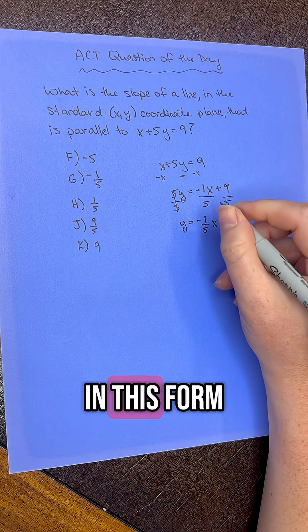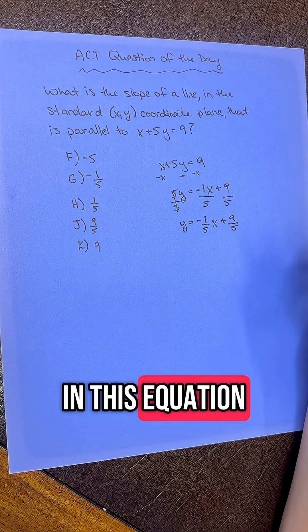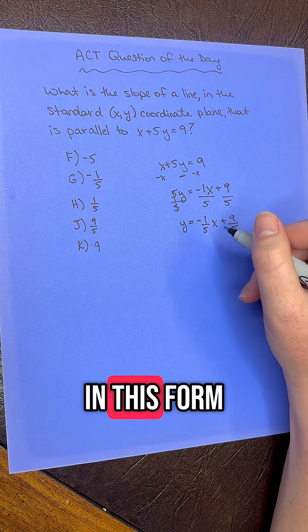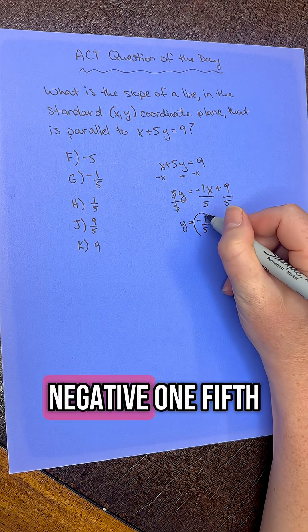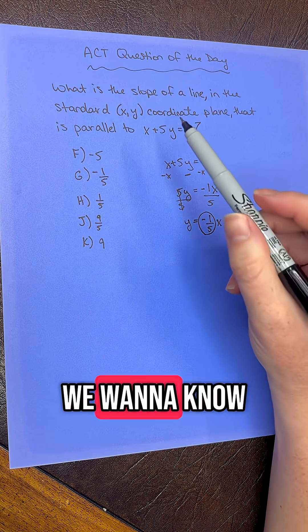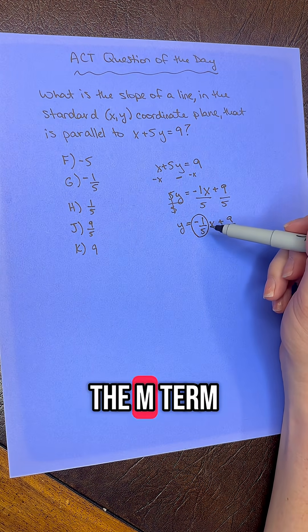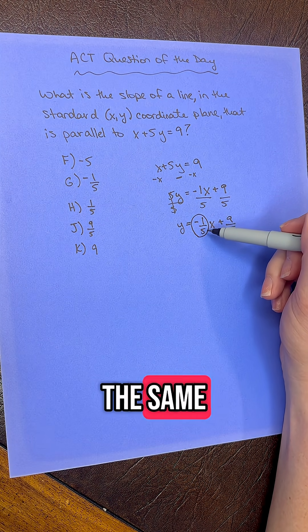Now it's important that we get it in this form because we need to know what the m term is, the slope is in this equation. And now that we have it in this form, we have our slope, which is negative 1/5. And because here we want to know what is parallel, when something's parallel, we know that the m term, the slope, is going to be the same.